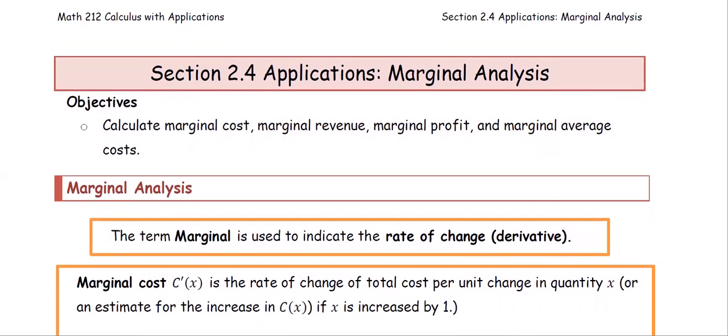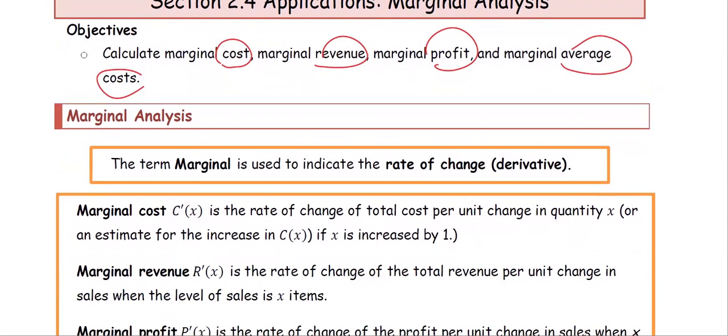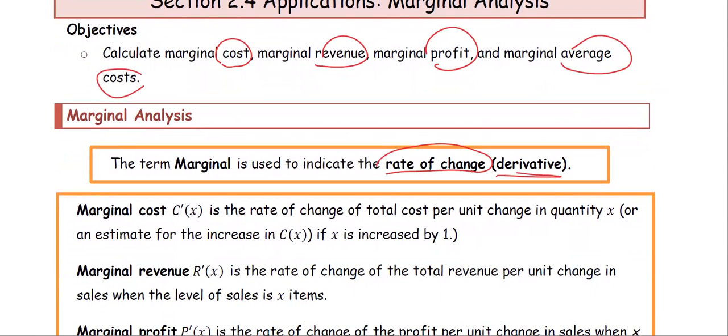In section 2.4, we talk about marginal analysis: marginal cost, marginal revenue, marginal profit, and average cost. The term marginal means the rate of change or the derivative.